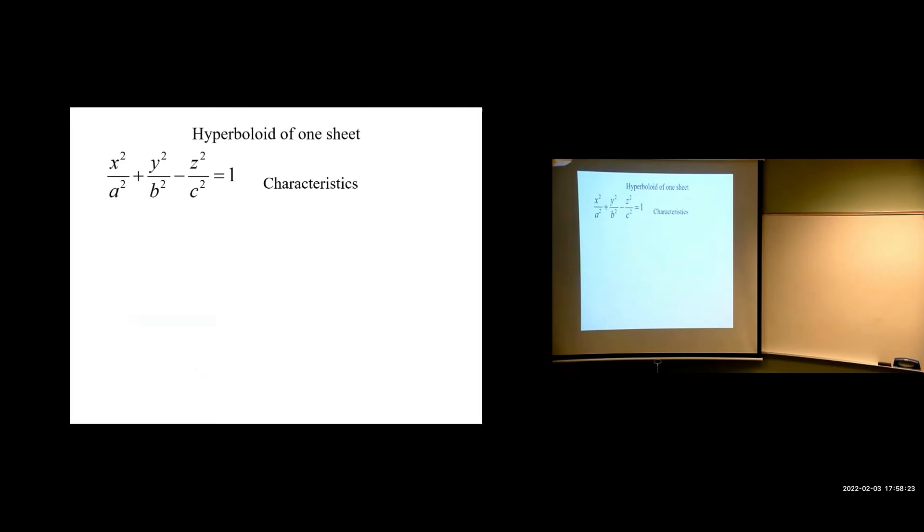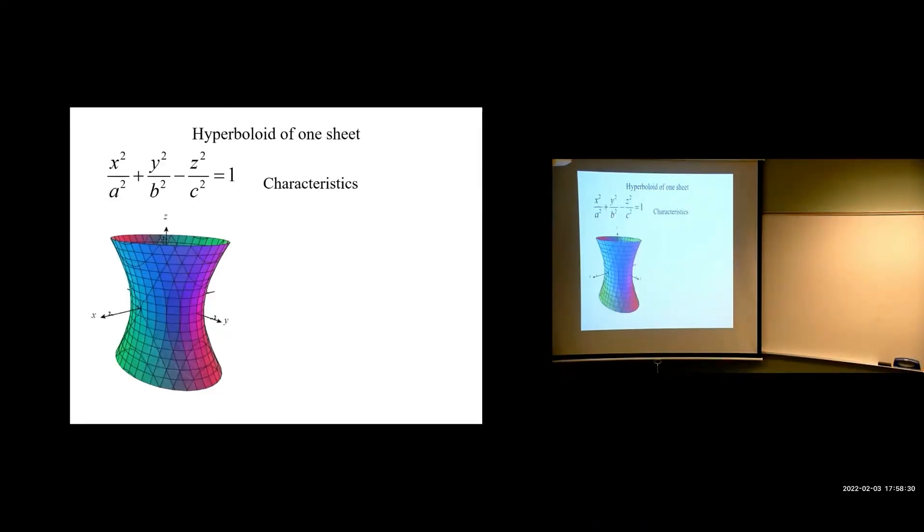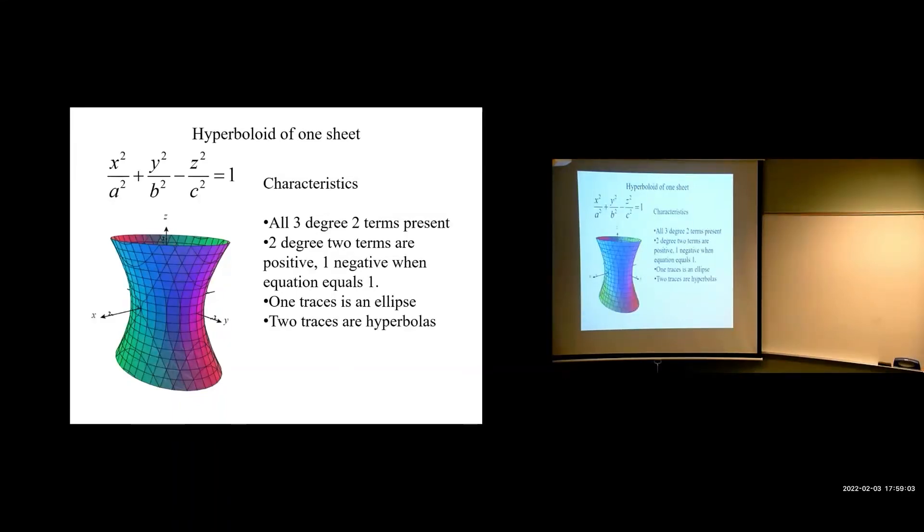A hyperboloid of one sheet. Notice what changed. We now have a negative right here. Just the single negative. And, that changed to a hyperboloid where, now, along these vertical planes, we have two hyperbolas. But, if you look along the top, we have an ellipse. Because, if we zero out the Z, we have the formula of an ellipse. But, if we zero out the X or the Y, we have the formula of a hyperbola in 2D. So, all three degree 2 terms are present. Again, this is not stuff I want you to memorize. Anytime you're looking at this stuff, you can absolutely use the notes for it. So, that's how we use the traces to help us break down a 3D object to 2D, which is much more manageable visually.